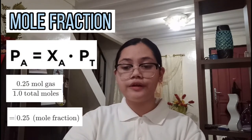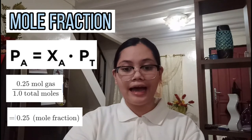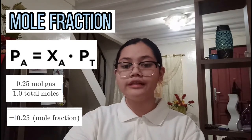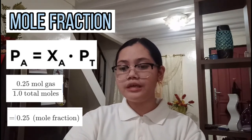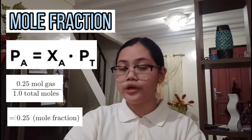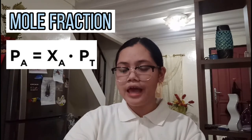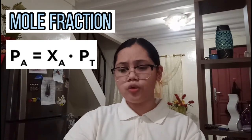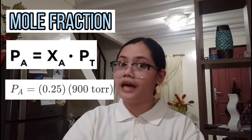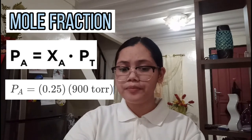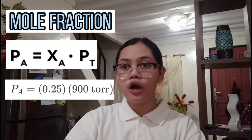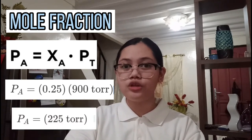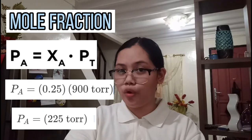For example, if there were 0.25 moles of a particular gas out of 1 mole of total gas particles, that would mean a mole fraction of 0.25. And if the total pressure of the sample was 900 torr, the partial pressure of that gas would be 225 torr.